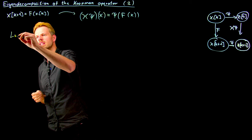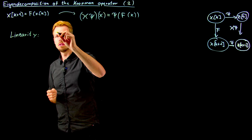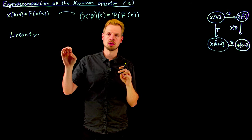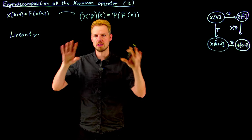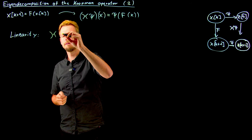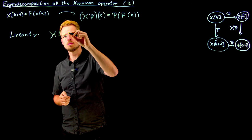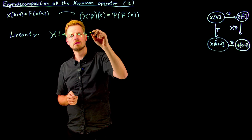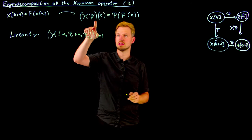Let's study the linearity, and in fact it's straightforward to show. What you need to do is define a function that is composed of the sum of two functions plus some coefficients and then show that this decomposes into multiple applications of the Koopman operator. So what we're going to do is study the Koopman operator applied to not one function but alpha_1 times psi_1 plus alpha_2 psi_2 of x.